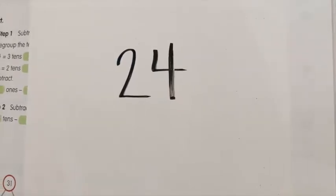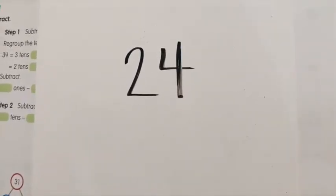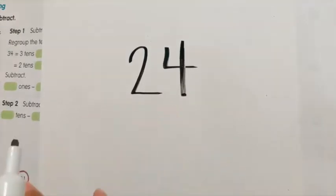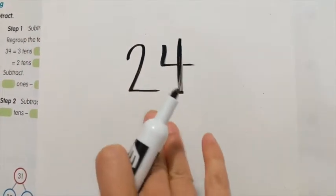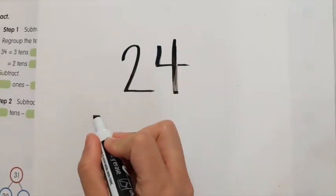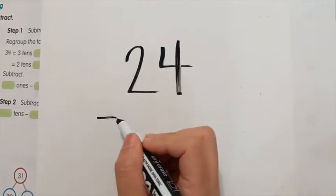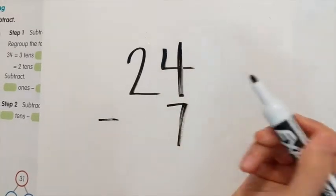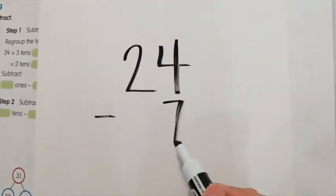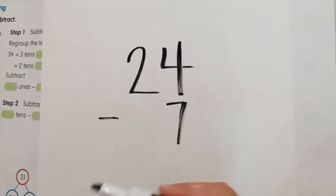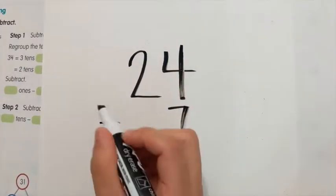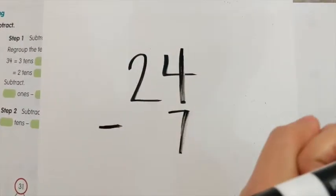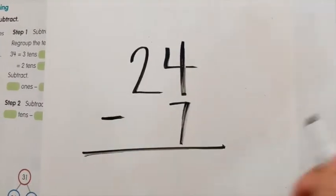Now let's go ahead and subtract with regrouping. Twenty-four — that's all I have. I only have twenty-four. I'm going to subtract, which means take away, eat it up, throw it out. I'm going to take seven from there. This number doesn't mean I have seven of anything — it's an action. I'm going to subtract seven from the twenty-four. This number is an action that I do to the twenty-four.